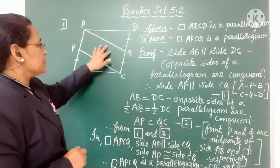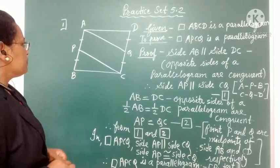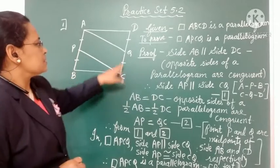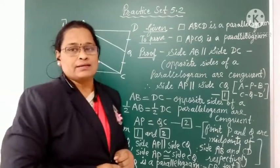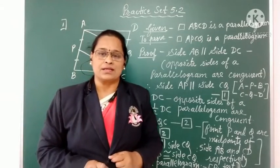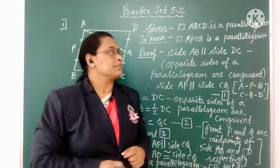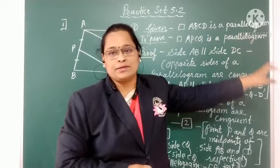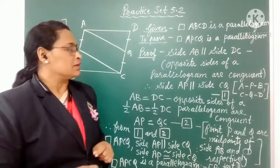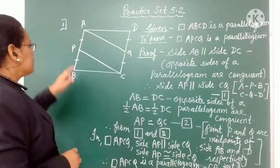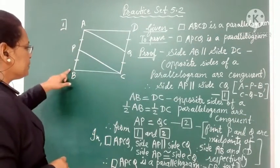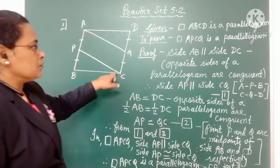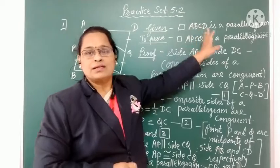Here you can see the figure. The name of the figure is quadrilateral ABCD. It is given that quadrilateral ABCD is a parallelogram. In the given information we write: quadrilateral ABCD is a parallelogram. One more given thing is that P is the midpoint of AB and Q is the midpoint of DC.